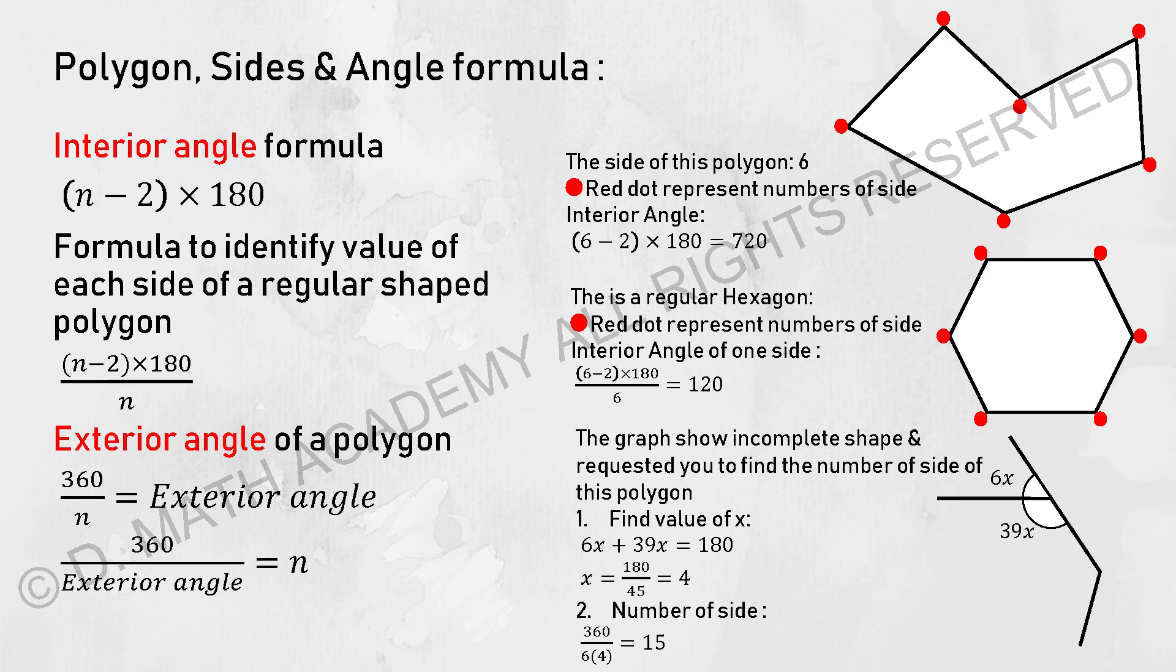Over the next question, this is a regular hexagon. So 6 minus 2 times 180 divided by 6, then you will get 120 as each of the interior angles.